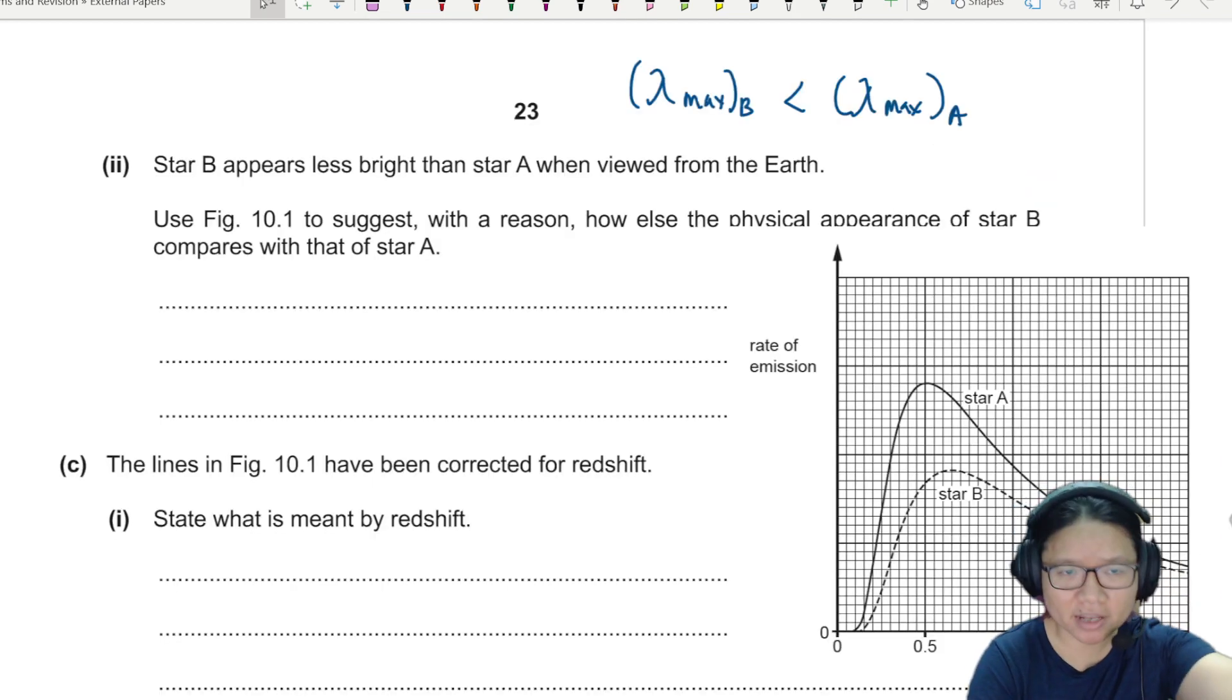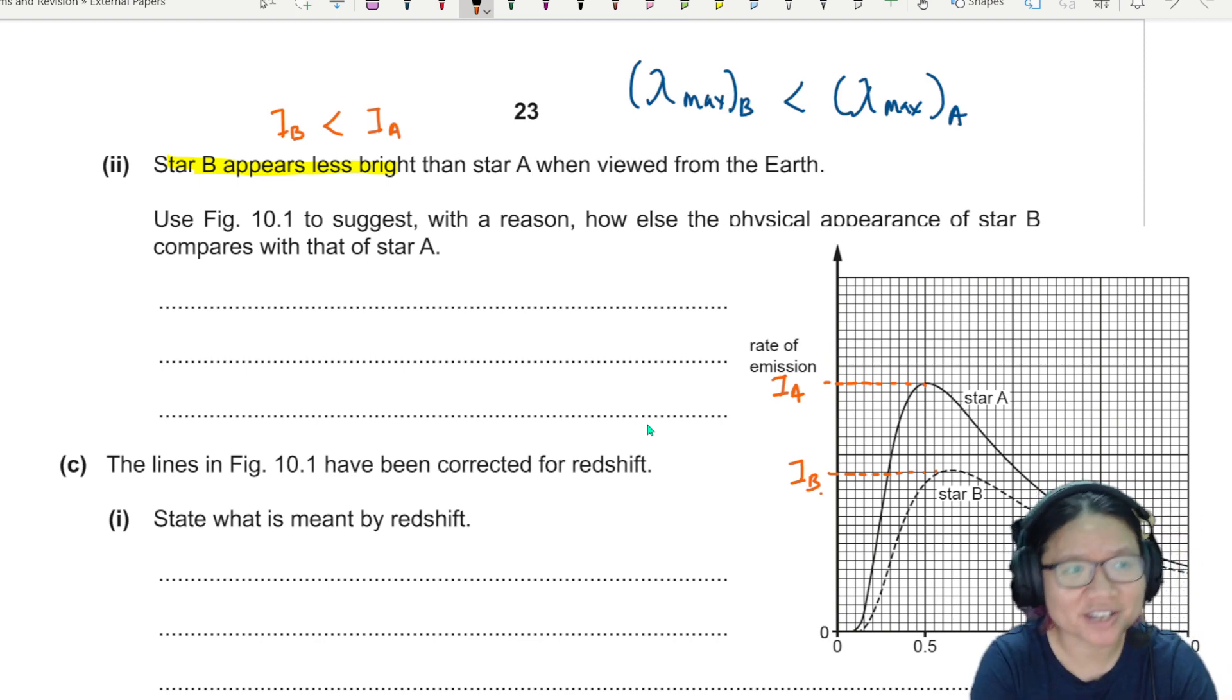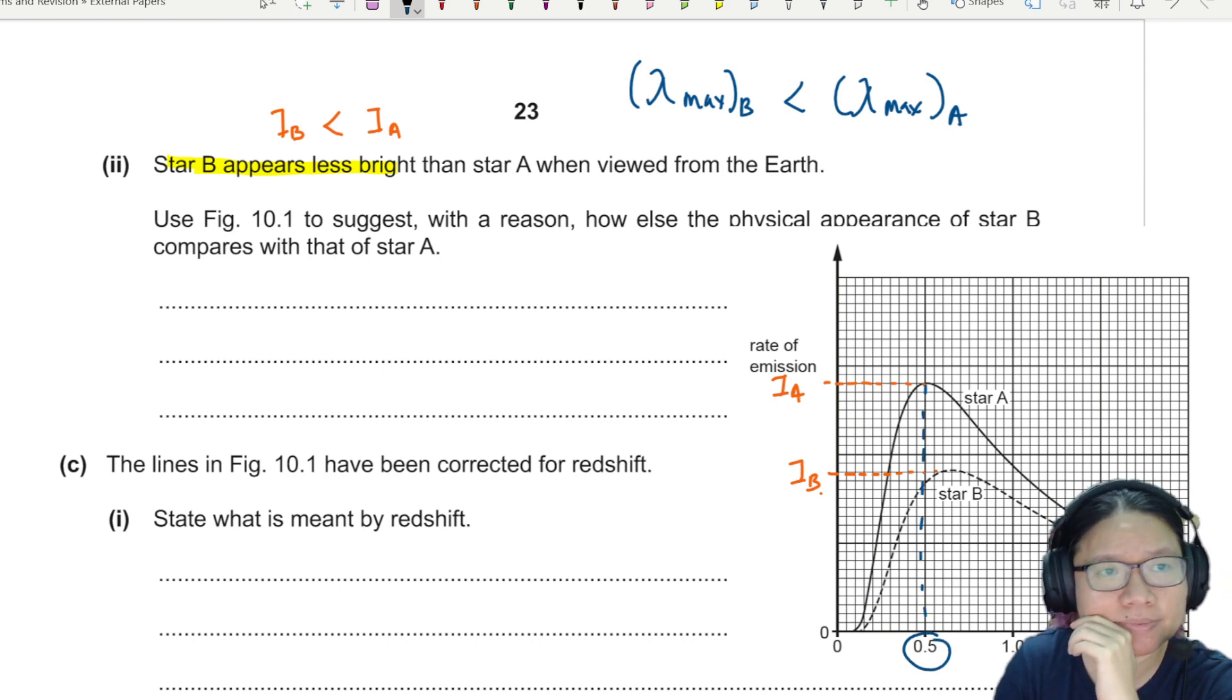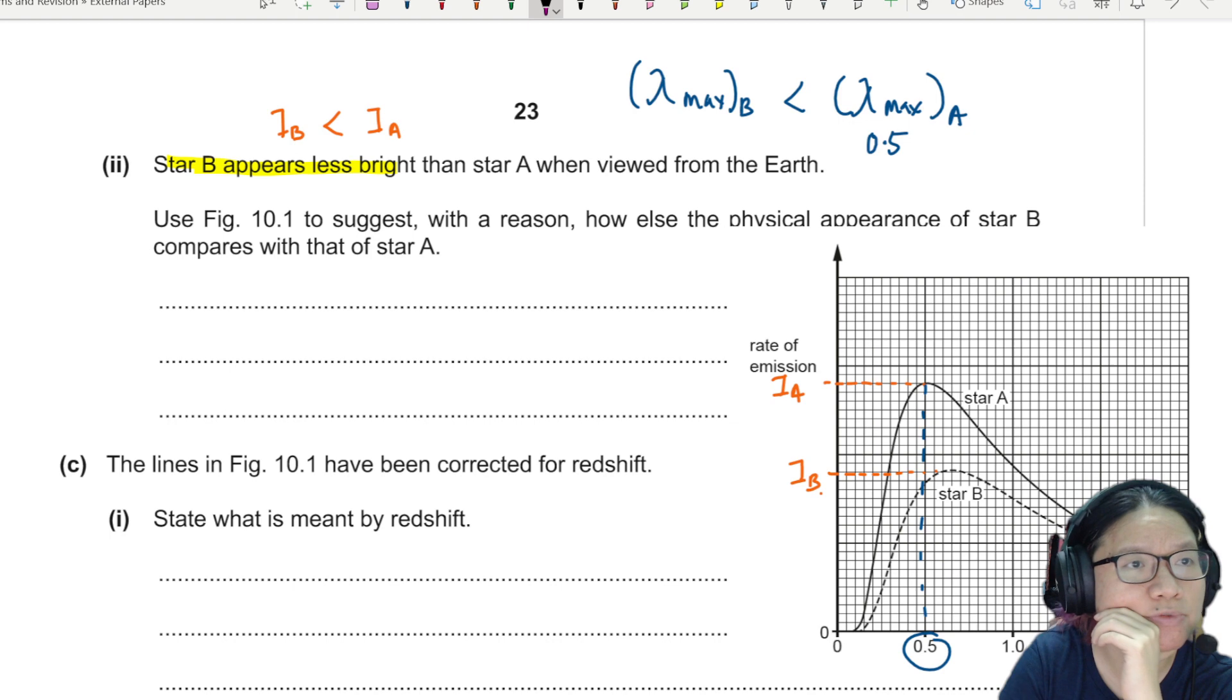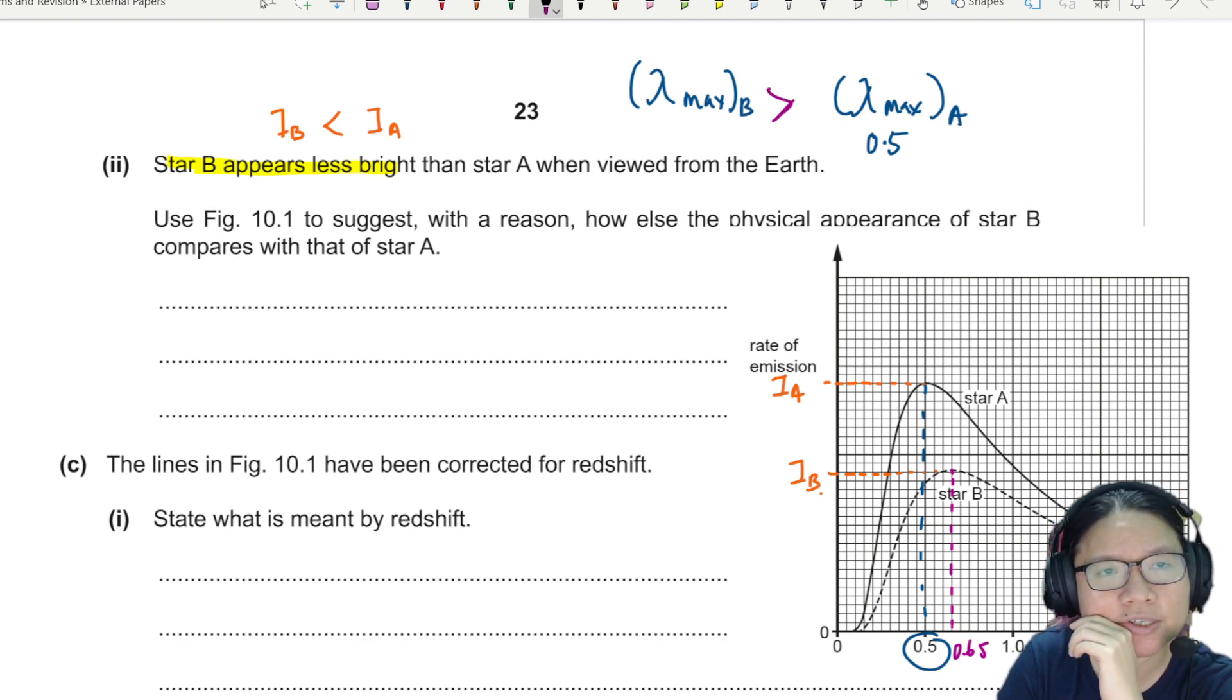For easy reference, the graph is behind my head. So the first thing you can see, right? Star B is less bright because the rate of emission is less. So the value of the intensity of A and the intensity of B, IB is less than IA. And just because you are less bright. The other thing that you can think about when it comes to physical appearance is your lambda max. So the lambda max for A is 0.5. And the lambda max for B, hey, lambda max for B is 0.65. So B is greater than A.